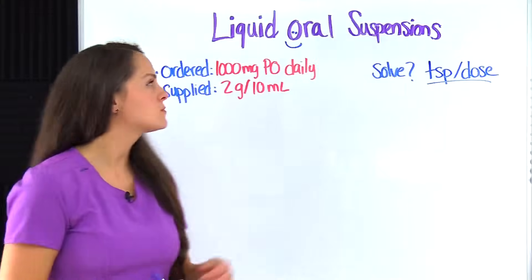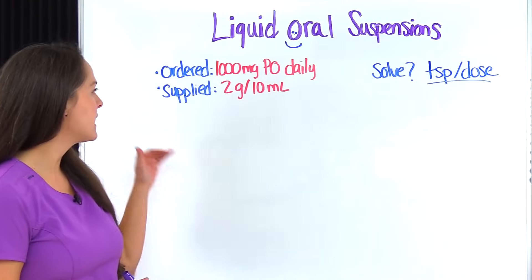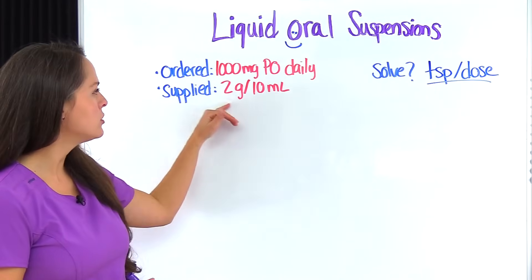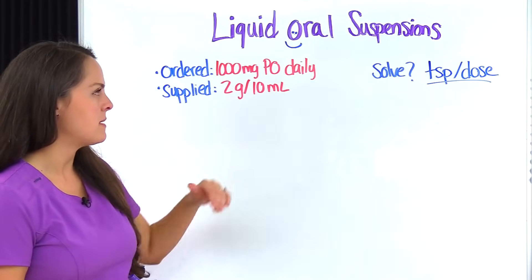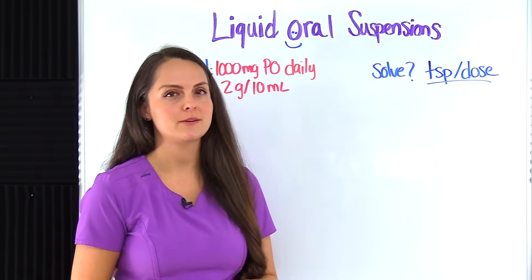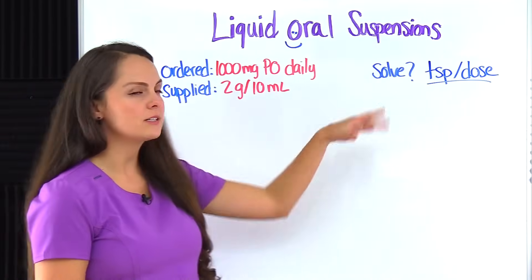This problem says we're ordered to give 1,000 milligrams PO daily, so by mouth daily. We're supplied with a bottle that reads on it 2 grams per 10 mls, and we need to solve for teaspoons per dose. So right off the bat you see we got some converting to do because we got milliliters over here and teaspoons over there.